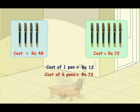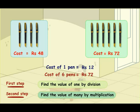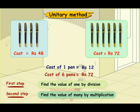So we answered the question using 2 steps. In the first step, we found the value of 1 by division, and in the second step, we found the value of many by multiplication. This method is called the unitary method. In unitary method, we first divide and then multiply — two simple steps. Remember them.